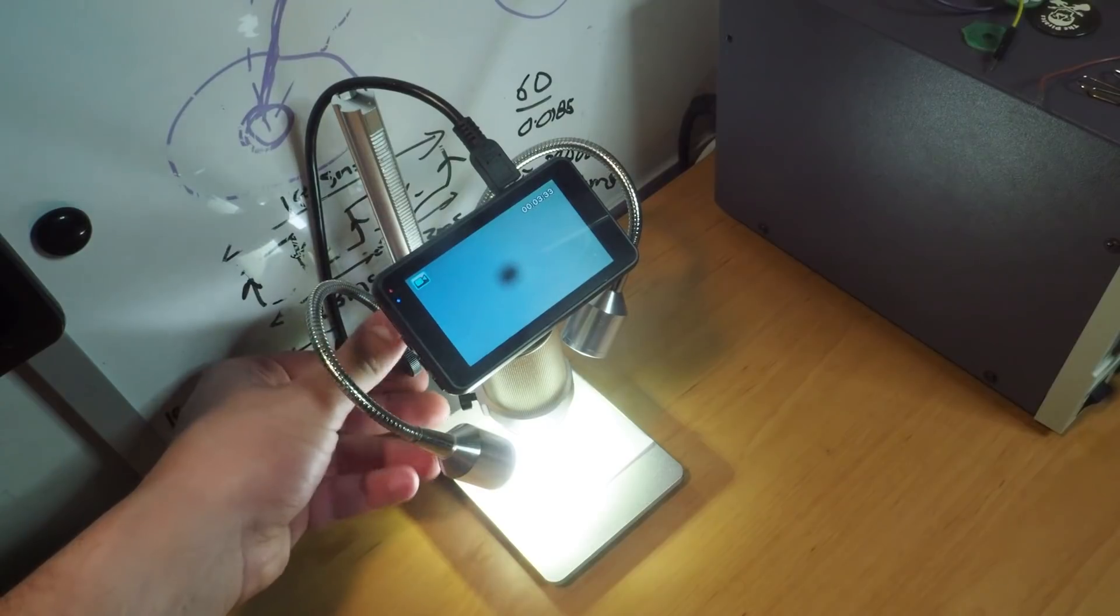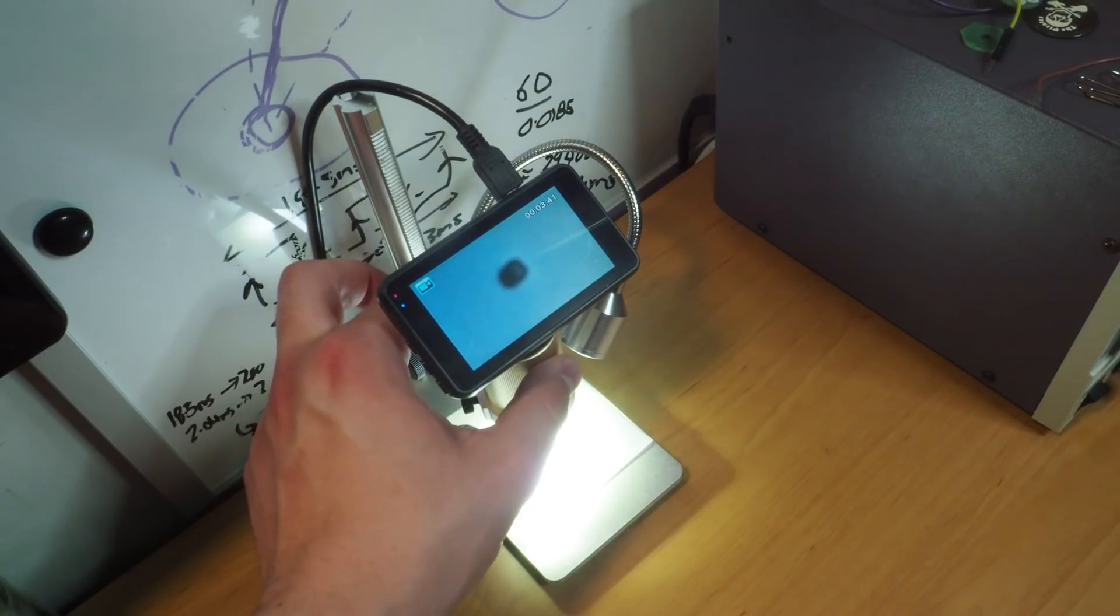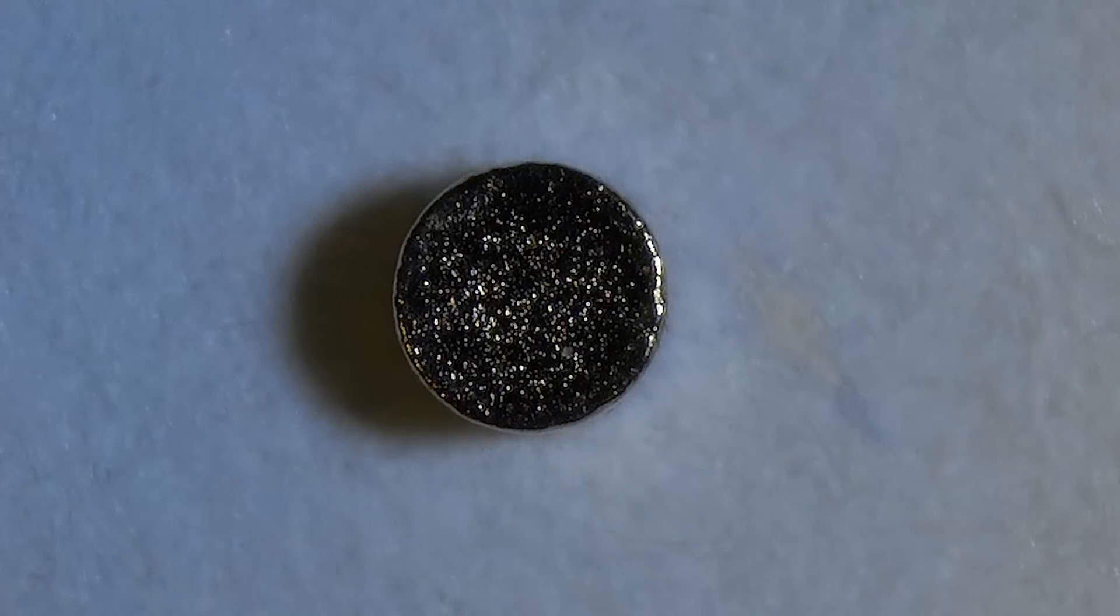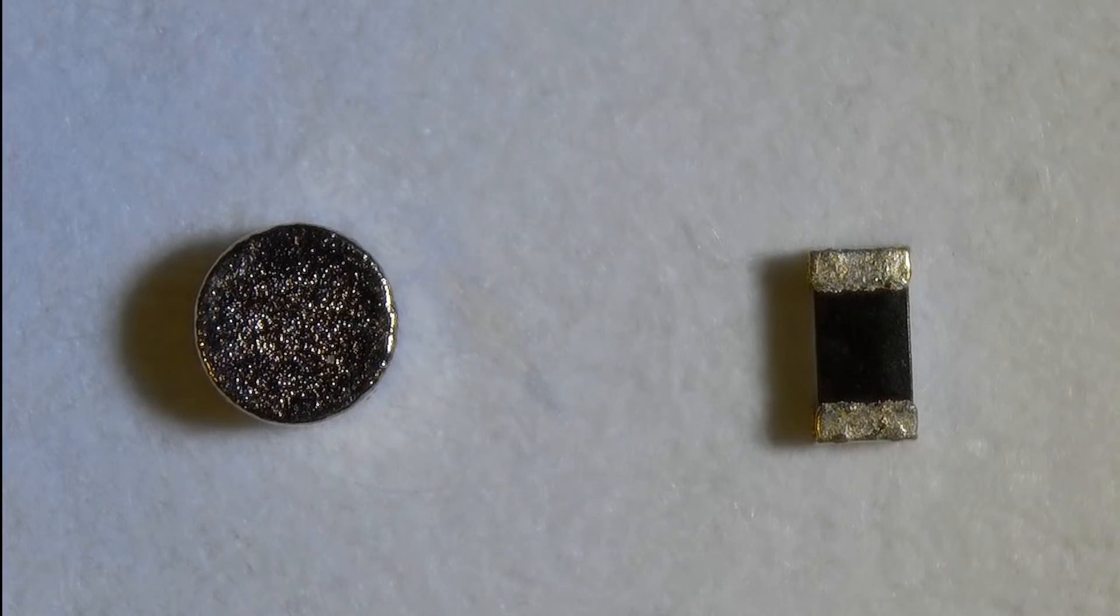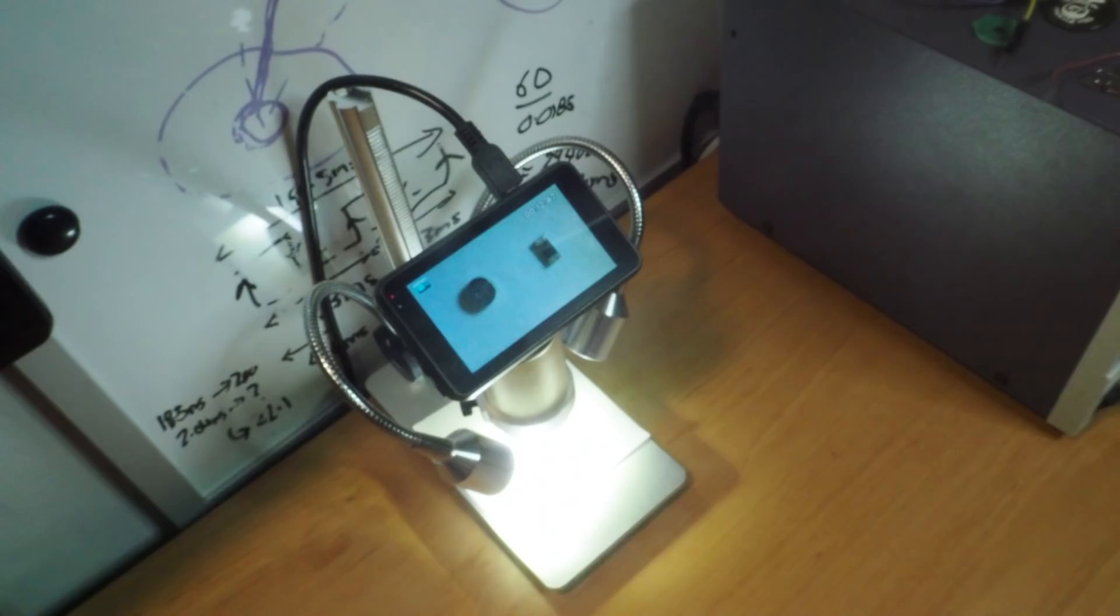To give you a little perspective of how small these magnets are, they are the same size as an 0402 resistor. And for those who have no clue what I'm talking about, here's how they compare to a match.